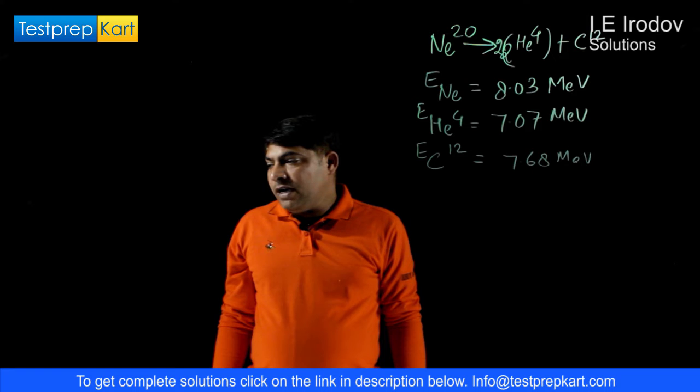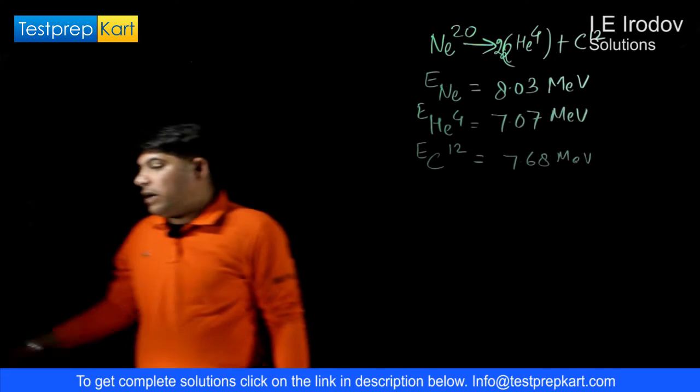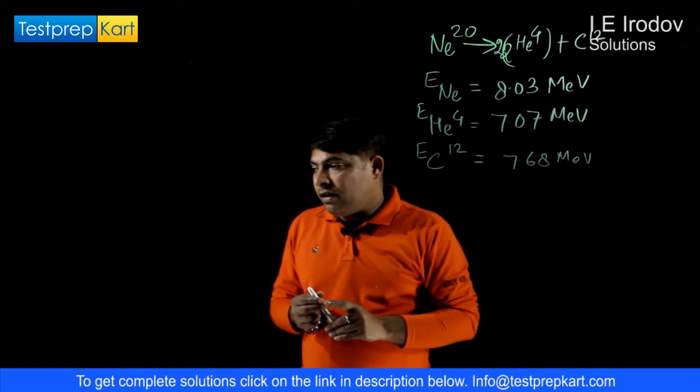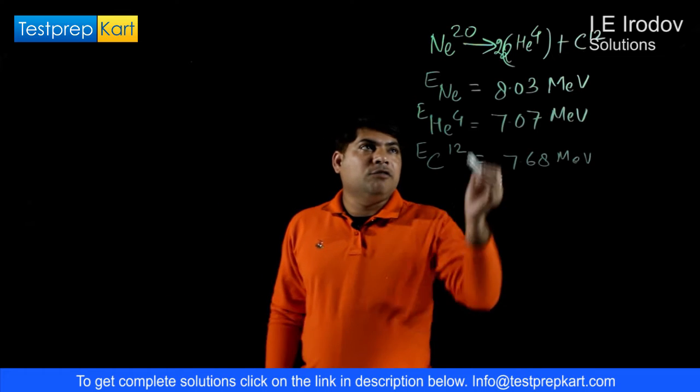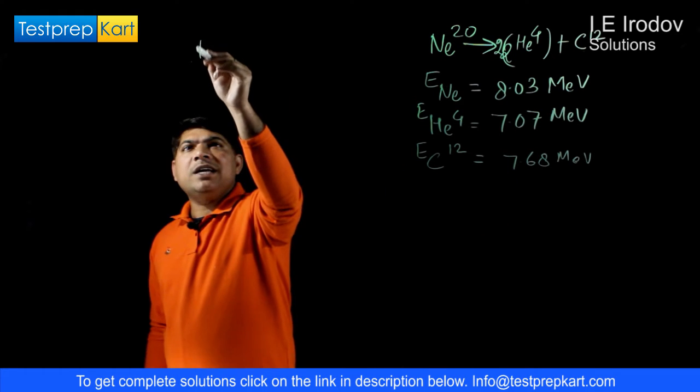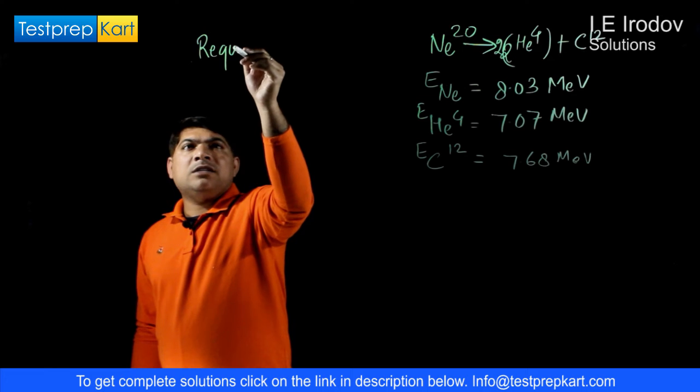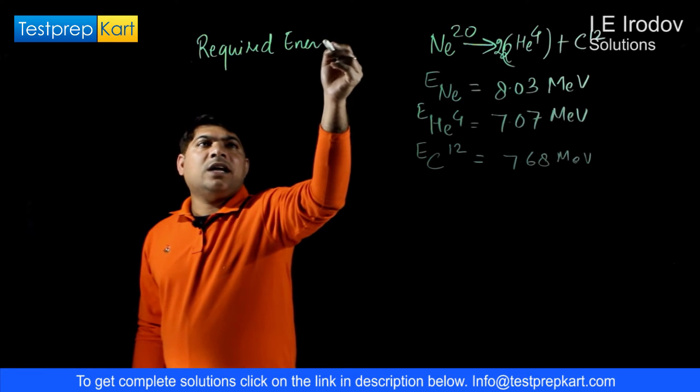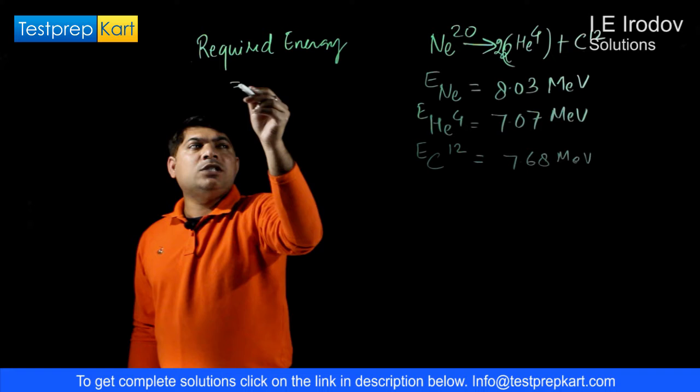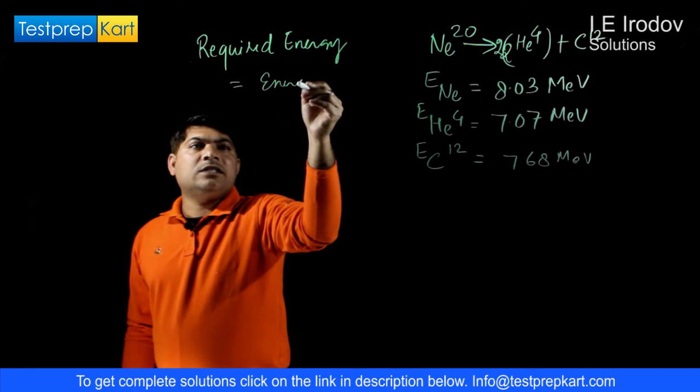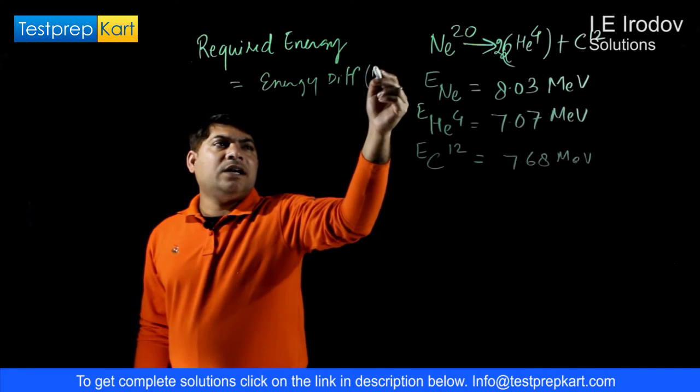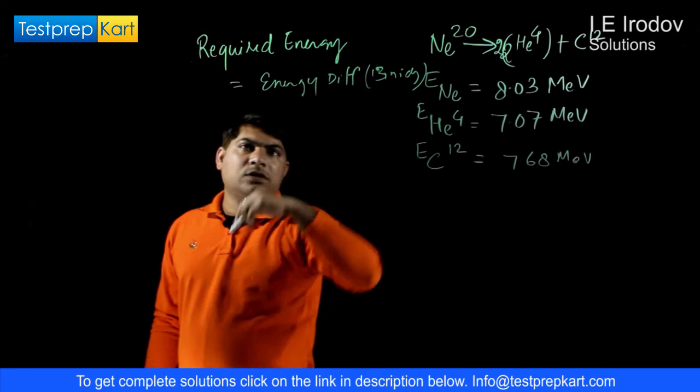In this case we have to find out the energy required for this separation of Neon nucleus. Basically we have to find out the required energy for this nuclear reaction. By the definition of binding energy, this required energy would be equal to the energy difference in terms of binding energy.